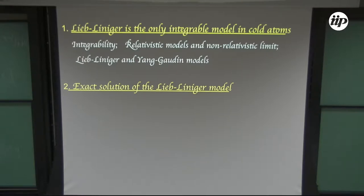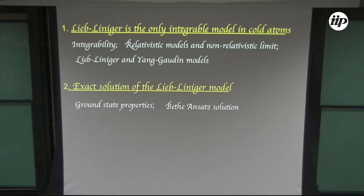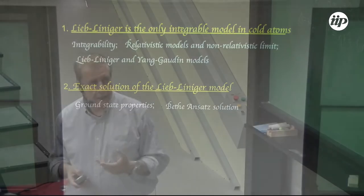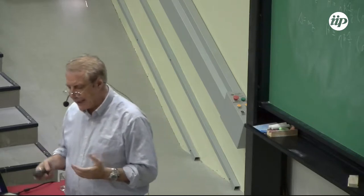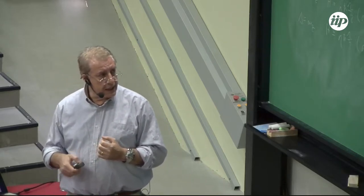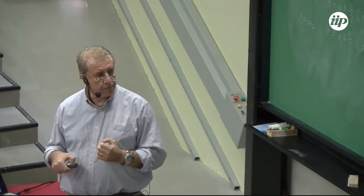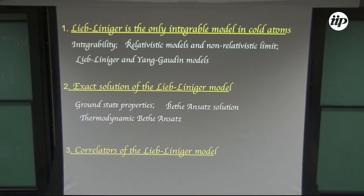Tomorrow we will dedicate the entire lecture to the exact solution of the Lieb-Liniger model — how to spell out ground state properties, how to make use of the Bethe ansatz solution, and also thermodynamics at finite temperature and density. This approach brings a lot of knowledge about the model, but leaves out an entire sector: how to compute correlation functions, which is definitely quite difficult to do within the Bethe ansatz scheme.